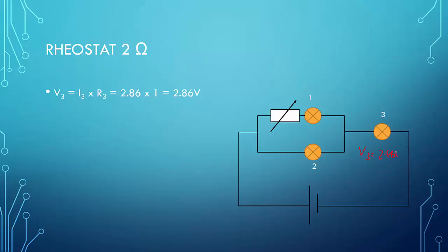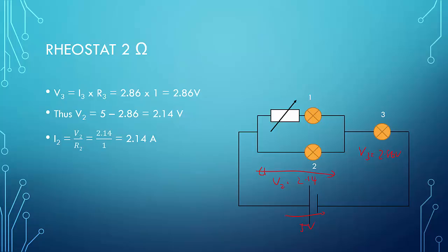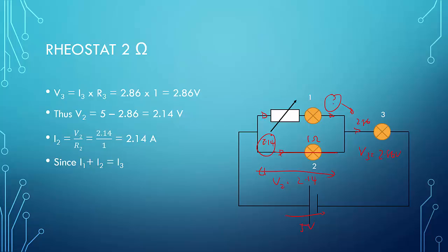Since V3 is 2.86 volts and the battery is still 5 volts, V2 would be a different value — in this case 2.14 volts. Then for I2: since V2 is 2.14 volts and R2 is still 1 ohm, applying Ohm's law gives I2 equals 2.14 amperes. Since I2 is 2.14 and I3 is 2.86, and I1 plus I2 equals I3, we can subtract to find the current in branch 1: 2.86 minus 2.14 equals 0.72 amperes.